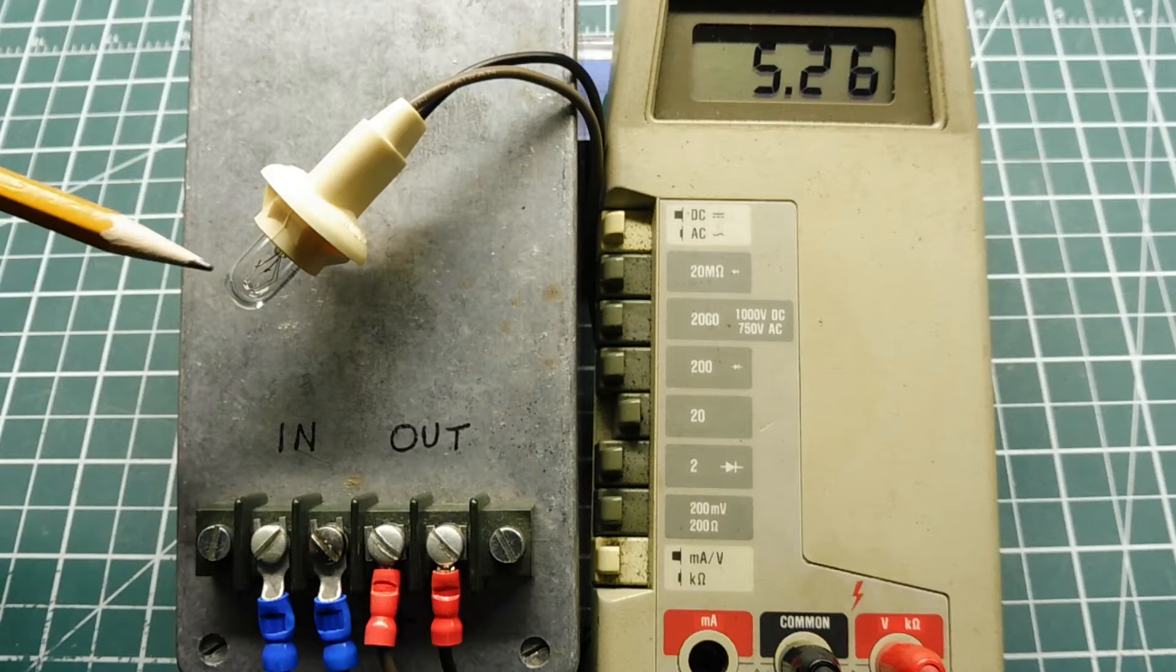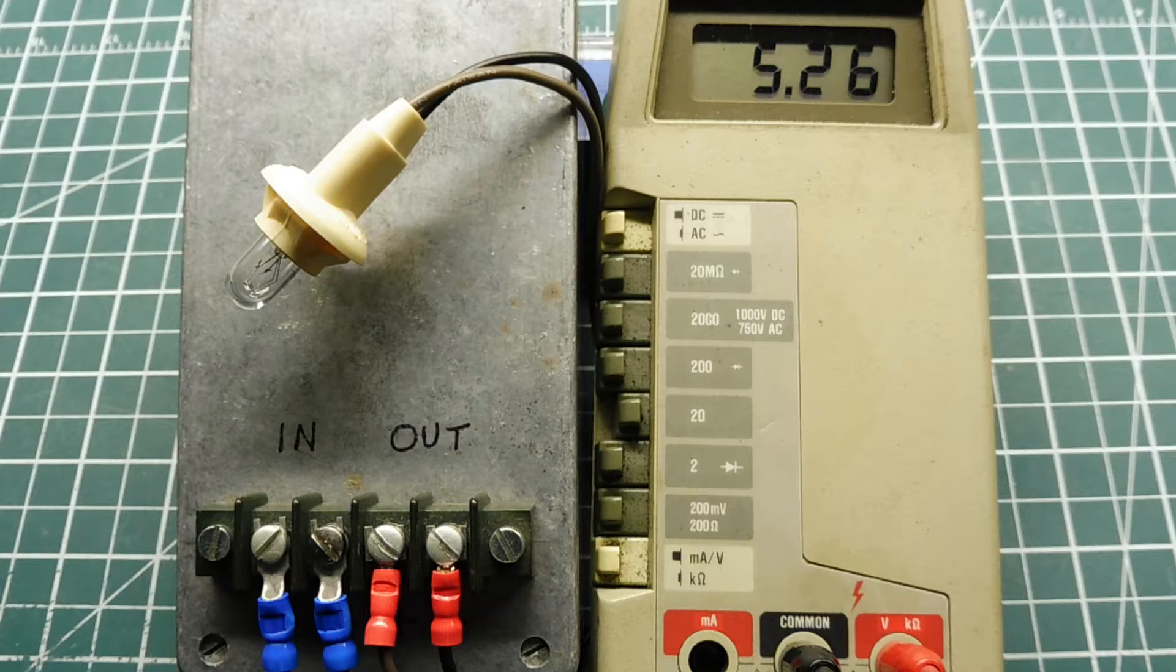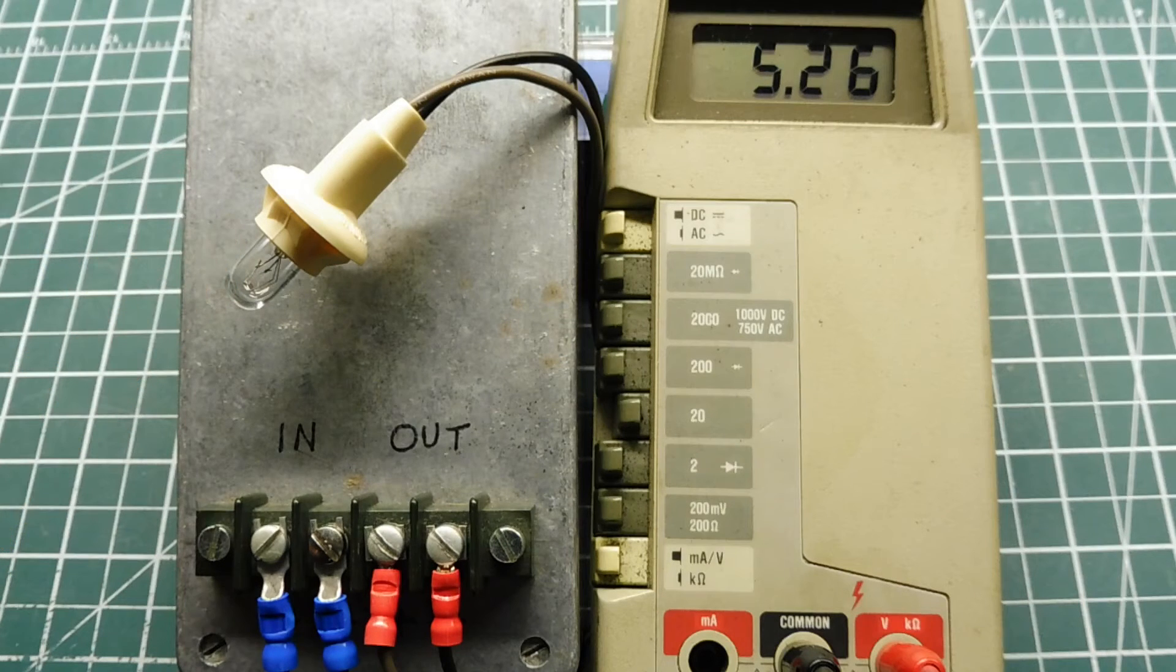Now my load will be represented by this bulb, this 12 volt bulb. Now when the voltage drops below 10 volts, it's going to cut out the power to the load, to the bulb, and shut it down.